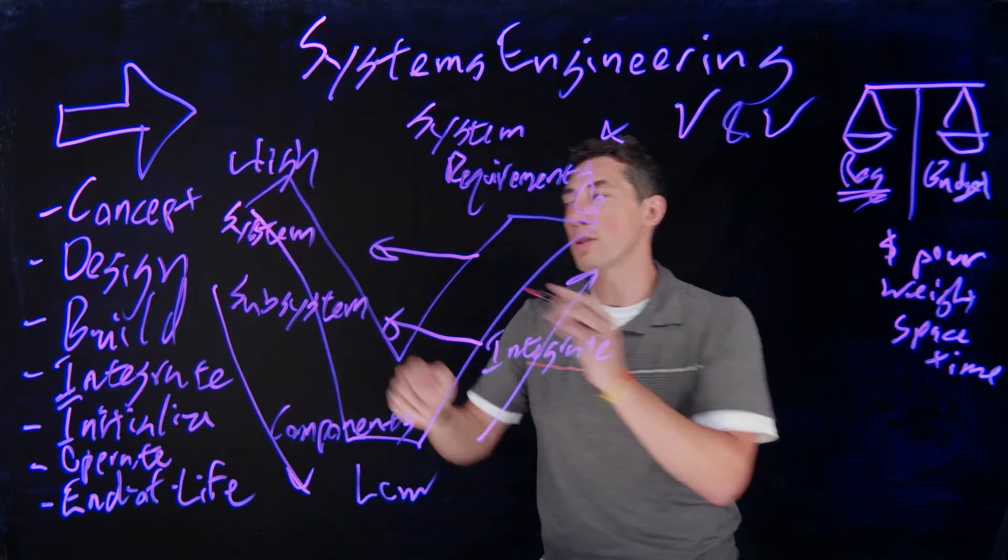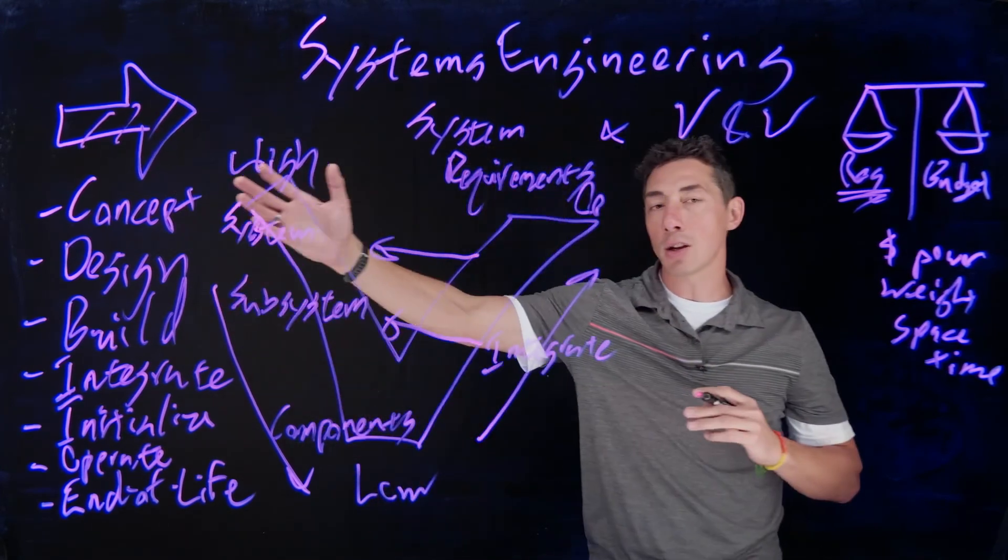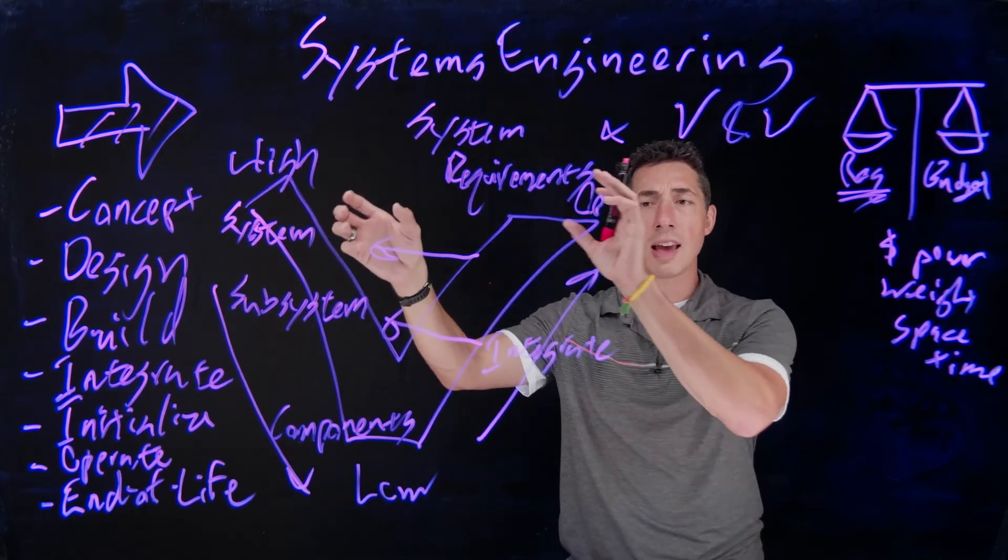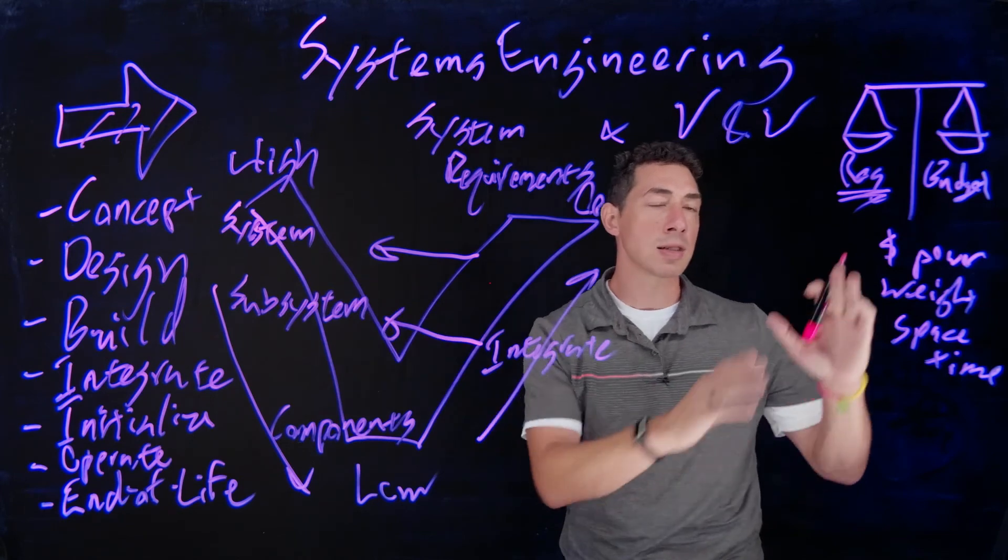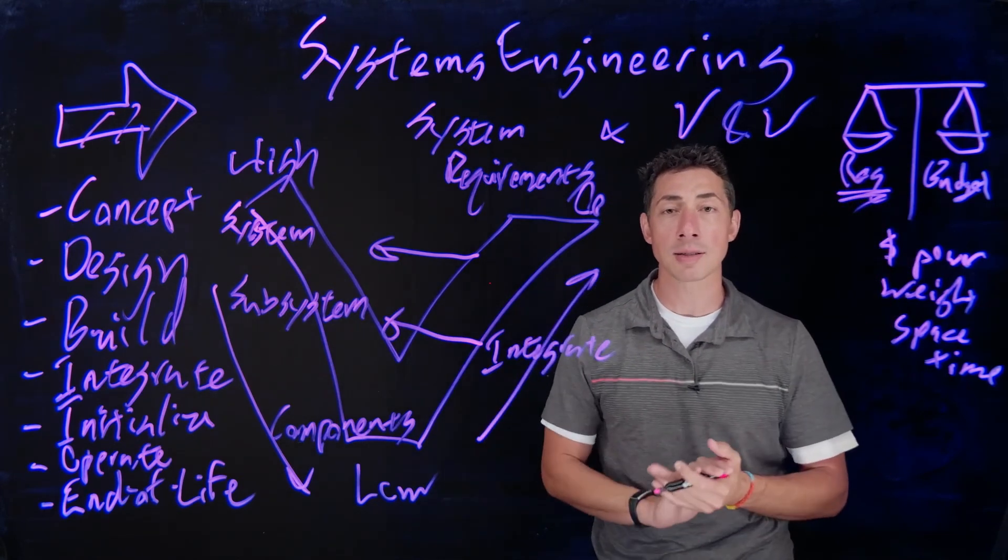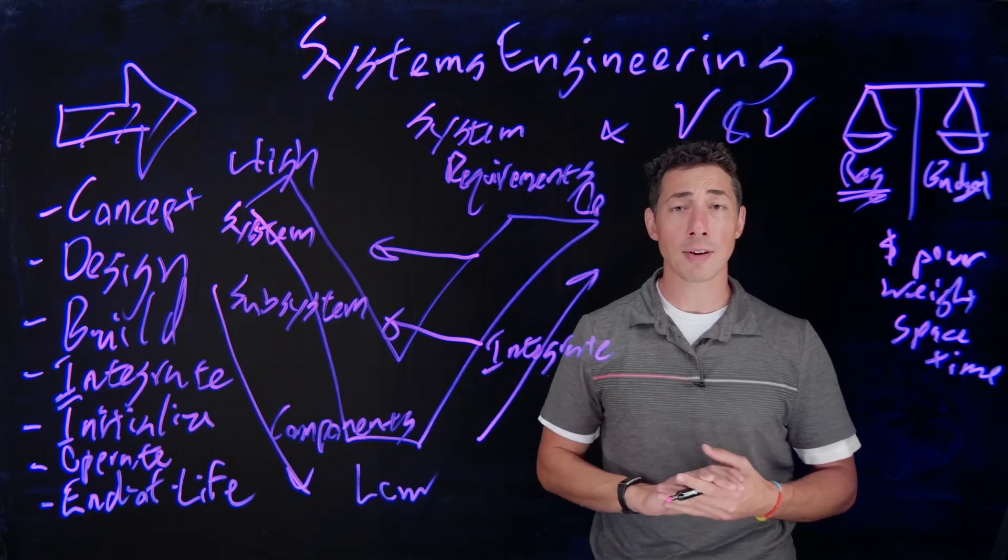So the idea is to move through this entire life cycle, you're going to follow this system V using these systems requirements and validation verification practices and balance the budget against the requirements throughout the entire process. And that's all I had to say about that. Thanks very much for watching.